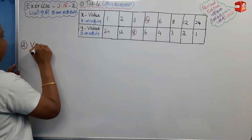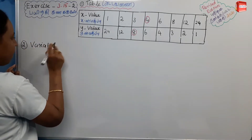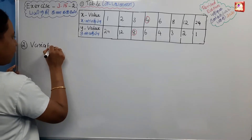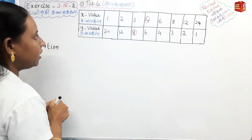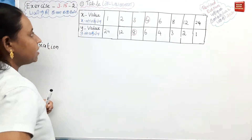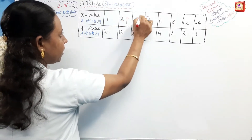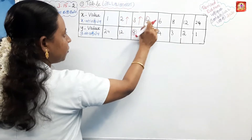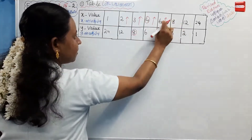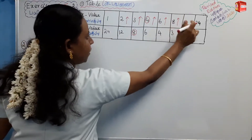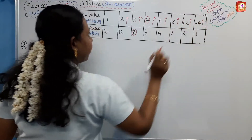Now let's look at the variation. Starting with the x-axis: from 1 to 2 increases, 2 to 3 increases, 3 to 4 increases, 4 to 6 increases, 6 to 8 increases, 8 to 12 increases, and 12 to 24 increases. Overall, x increases.